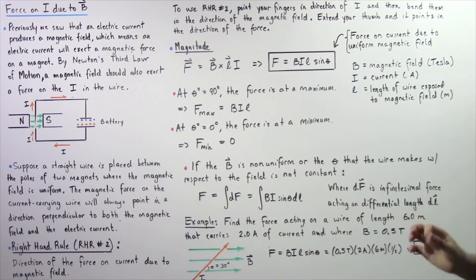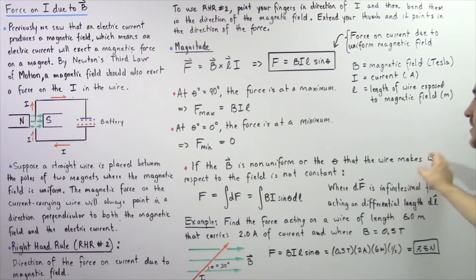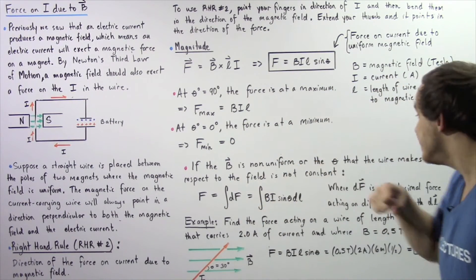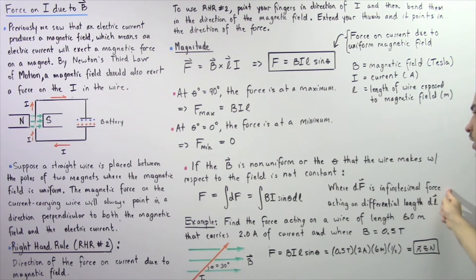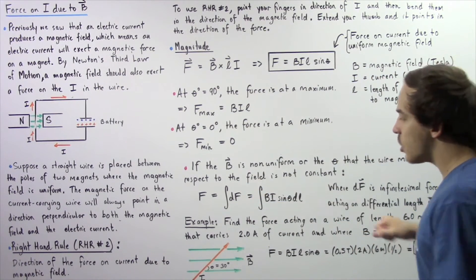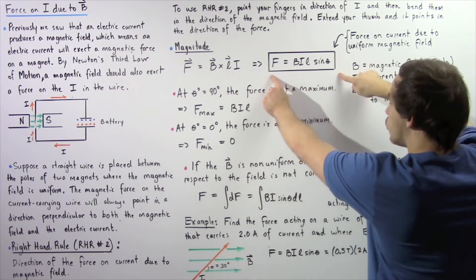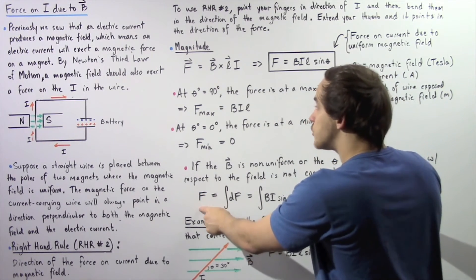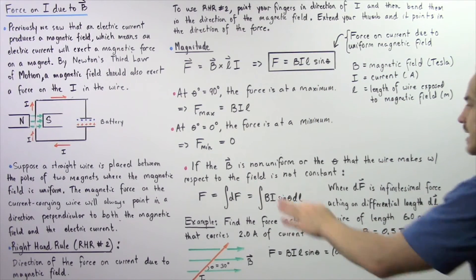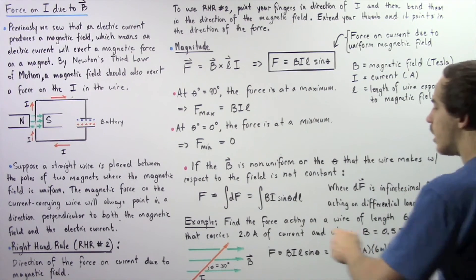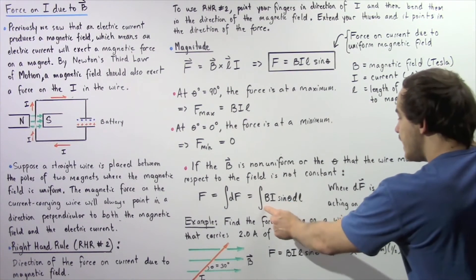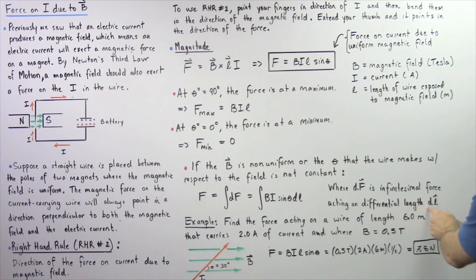Now, if our magnetic field B is non-uniform, or if the angle that the wire makes with respect to our field is not constant — that is, the angle changes — then to find our force, we have to take the integral of our infinitely small force. So the force acting on our electric current due to a non-constant magnetic field is equal to the integral of the product of our magnetic field B, our electric current I, the sine of the angle theta between B and our differential length dL.